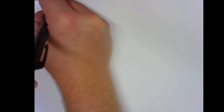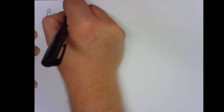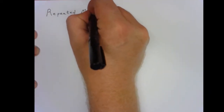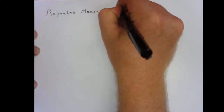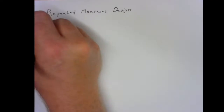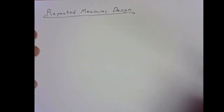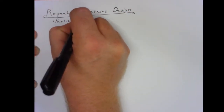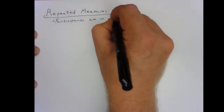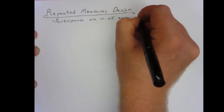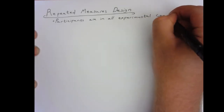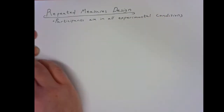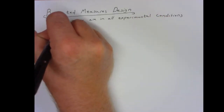In this video we'll be covering the repeated measures, also known as within-subjects design. The key feature of this design is that every single participant is in all of the different experimental conditions.